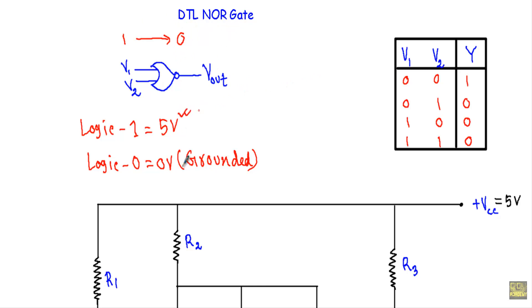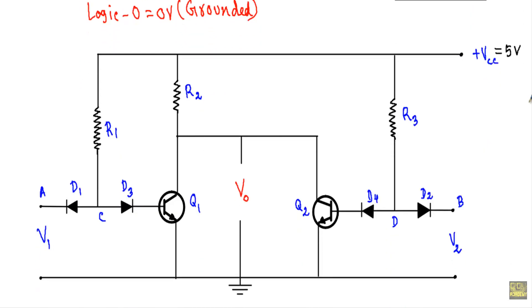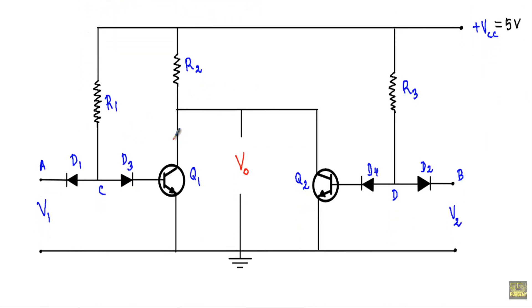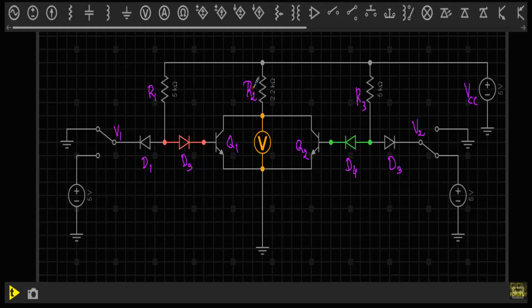To specify logic 1 in DTL NOR gate I will apply 5 volts. To specify logic 0 I will apply 0 volts, meaning that terminal will be directly grounded. This is the circuit structure of the DTL NOR gate. We apply input A or V1 at the terminal of diode D1, and input B or V2 at the terminal of diode D2. We take the output across the collector terminals, which are connected together.